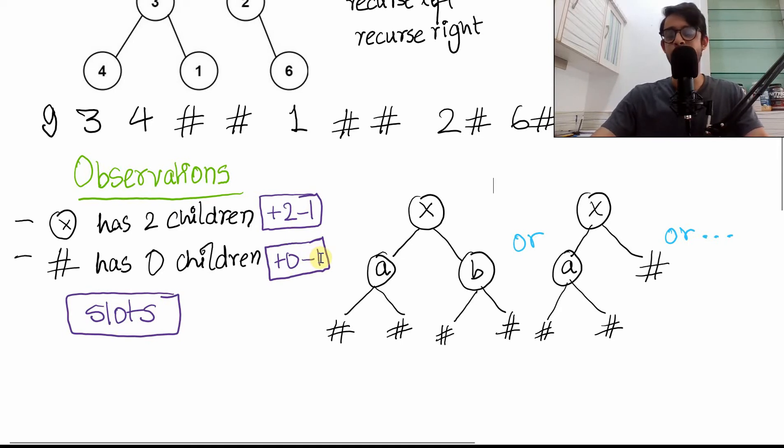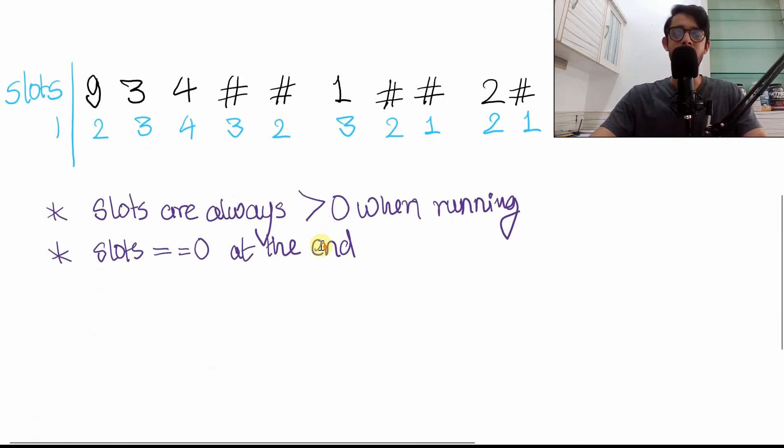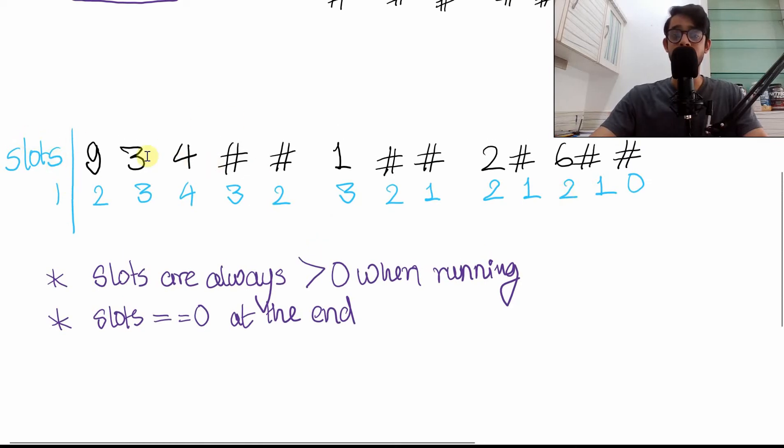We are going to exploit that property because now we'll look at this solution. We'll look at the original string once again and we'll do a quick dry run of it to understand what's happening. First thing, we'll start the slots from one. Why is that?